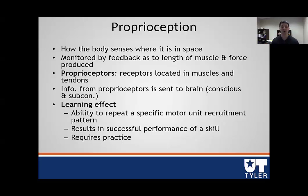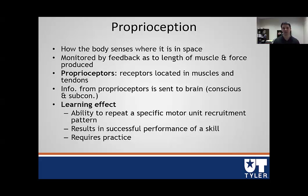We have two main proprioceptors that we're going to cover in this class: receptors located in the muscle and receptors located in the tendons. The information from these is sent into the central nervous system—into the spinal cord and then up to the brain—and can be either conscious or subconscious, as we talk about reflexes later on. Many of those are subconscious.